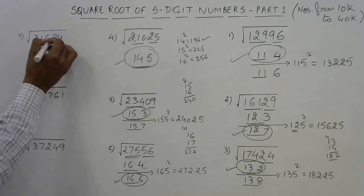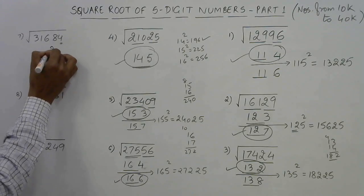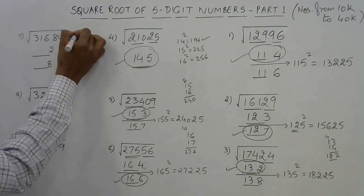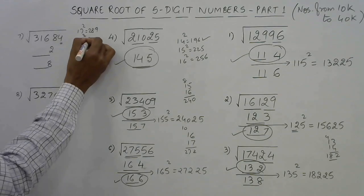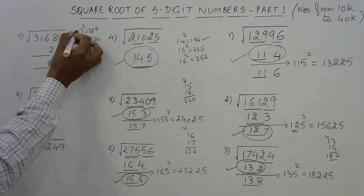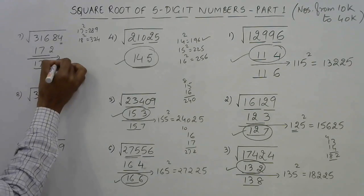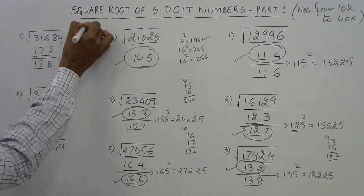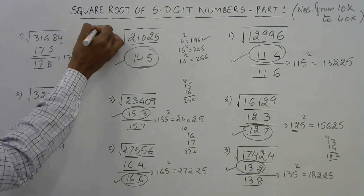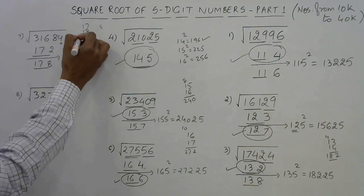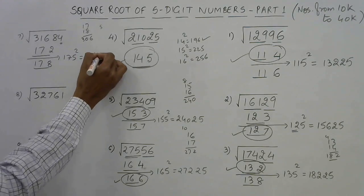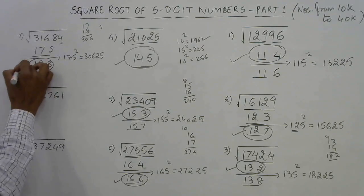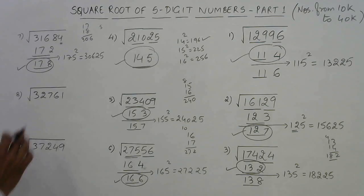Next number ends with 4: the answer ends with 2 or 8. The triplet: 17² = 289, 18² = 324, so 17 is the remaining part. Options: 172 or 178. Intermediate: 175². Find 17 × 18 = 306, append 25 → 30625. The original number is greater than 30625, so the answer is the larger one: 178.